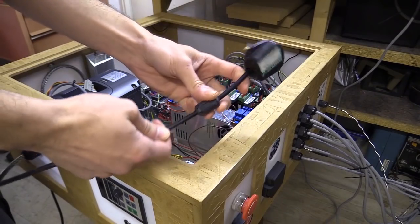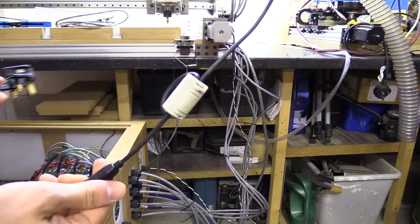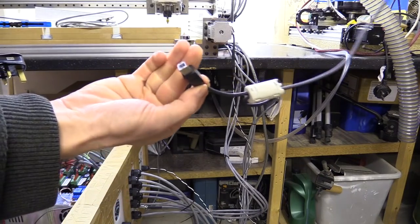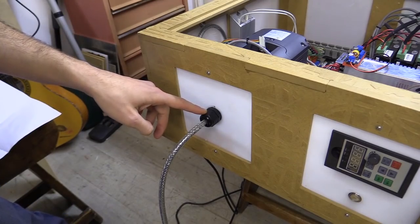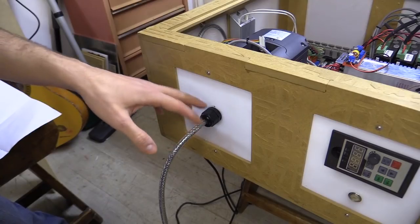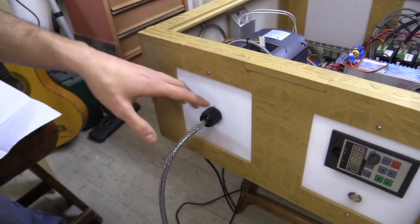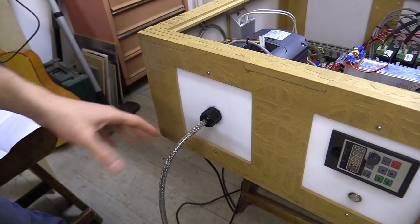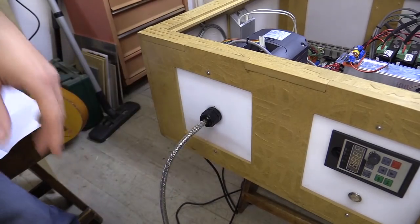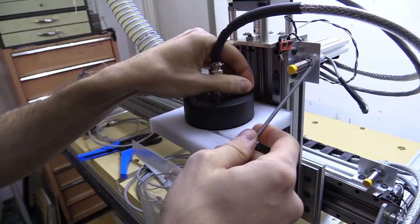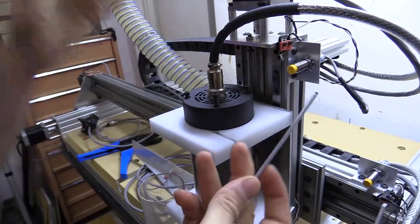I've also put a ferrite core on the main plug and another one on the USB cable. I've removed the aviation panel mount here and replaced it with a gland so the cable is not interrupted and the shielding isn't interrupted, this runs all the way to the spindle. So the spindle is a little bit different now, there's two things that I've done.